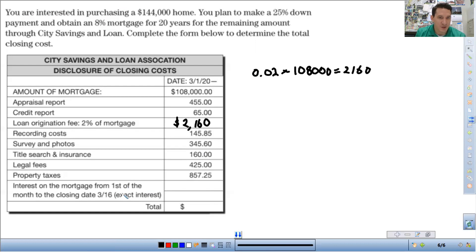Interest on the mortgage from the first of the month to the closing date, 3/16. So you have to calculate the interest, what you owe, the interest that you owe, because you're not making a payment during. So the amount of mortgage is loaned out to you on March 1st. All the closing, the escrow, this all takes two weeks or 15 days, rather. So you have to pay the interest as part of the closing costs. So let's actually calculate the interest there.